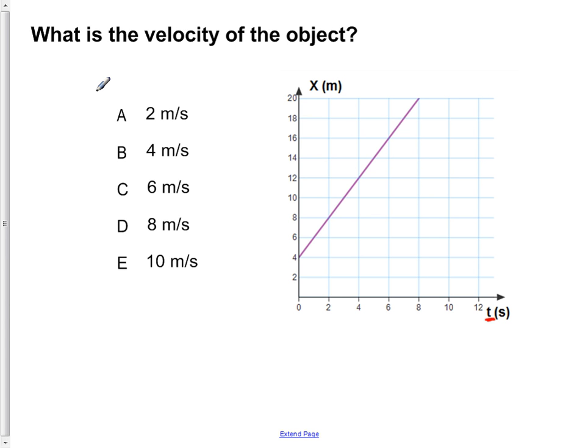What is the velocity of the object? We are given a position versus time graph as shown here. We have to deduce from this what the velocity of the object is.